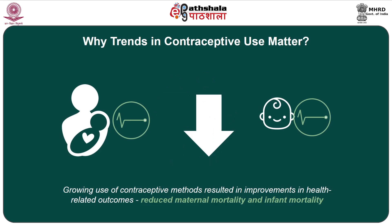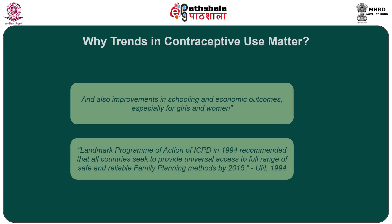Particularly, we can see improvement in health-related outcomes, in terms of reduction in maternal mortality as well as infant mortality. There is evidence for this from various studies, the references are given within the parenthesis. Contraceptive use also improves schooling and economic outcomes, particularly with reference to girls and women. This is again supported by evidence from research.